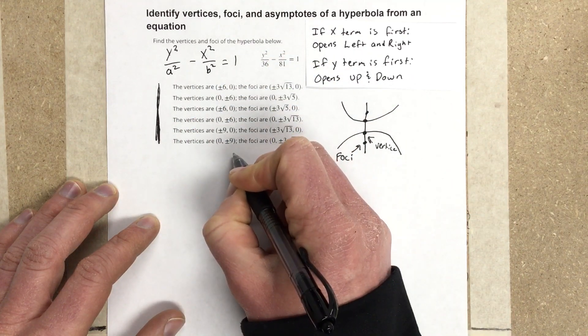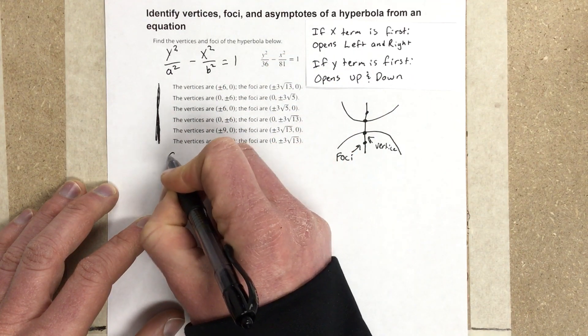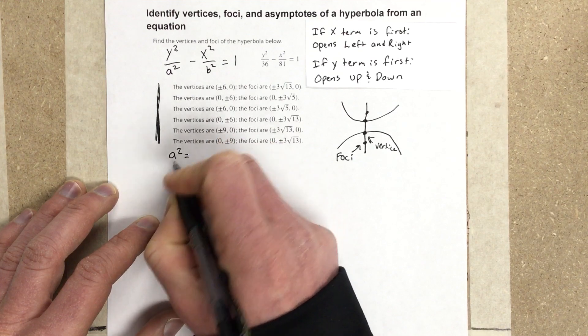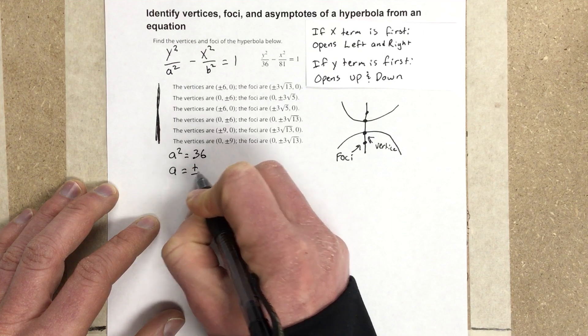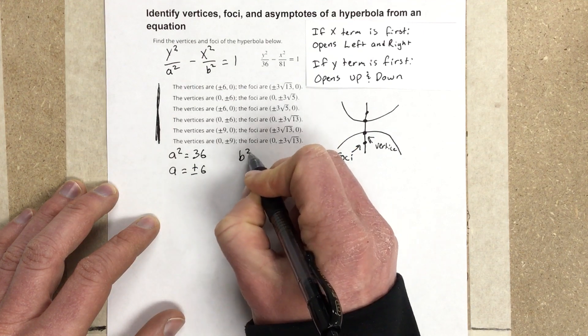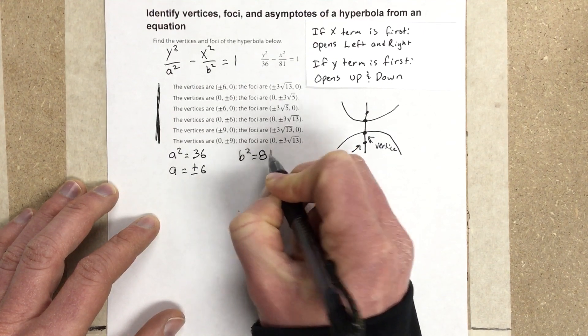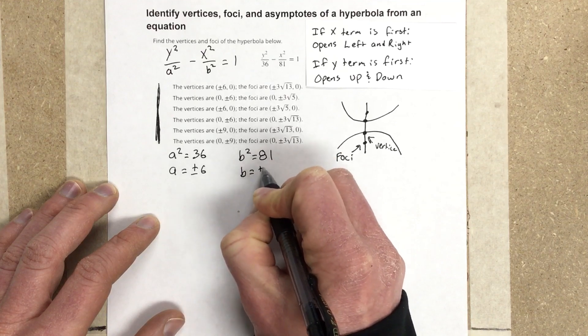We know that a squared is equal to 36, which means a is equal to plus and minus 6 when I take the square root, and b squared is equal to 81, so b is equal to plus and minus 9.